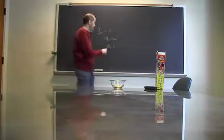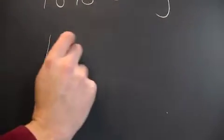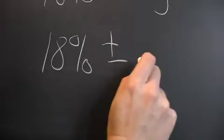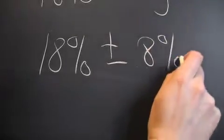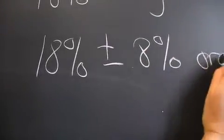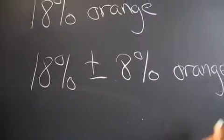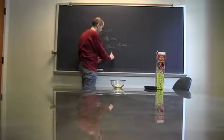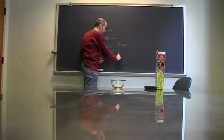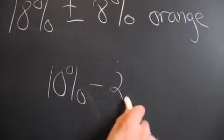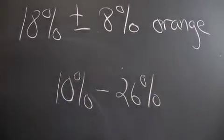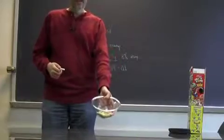And so, I might say 18% plus or minus 8% orange. So, while I'd be uncomfortable saying 18% orange, I might be comfortable saying that we would have a range between 10% and 26%. Now, that's an awfully big range because there's only 100 percentage points, but that's not a lot of sample.